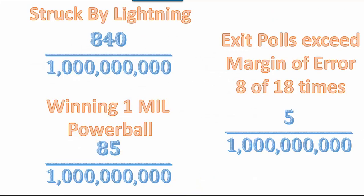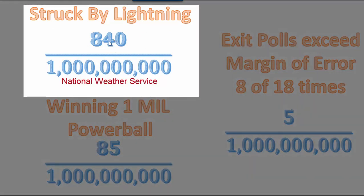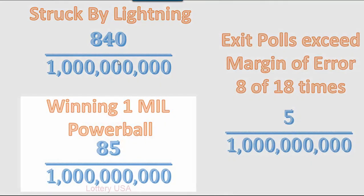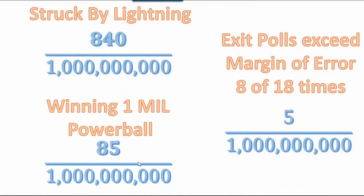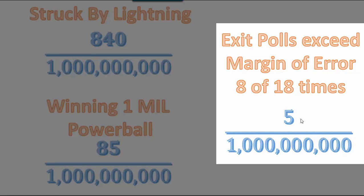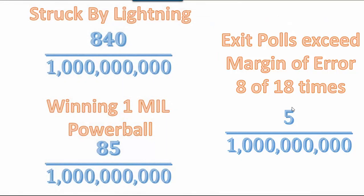To give you an idea of how small that number is: your probability of being struck by lightning in any given year is about 840 out of a billion; your probability of winning $1 million in the Powerball (the second prize) is 85 out of a billion. By comparison, the probability of exit polls exceeding the margin of error 8 of 18 times is just 5 out of a billion — not even as good a chance as winning Powerball or being struck by lightning in a given year.